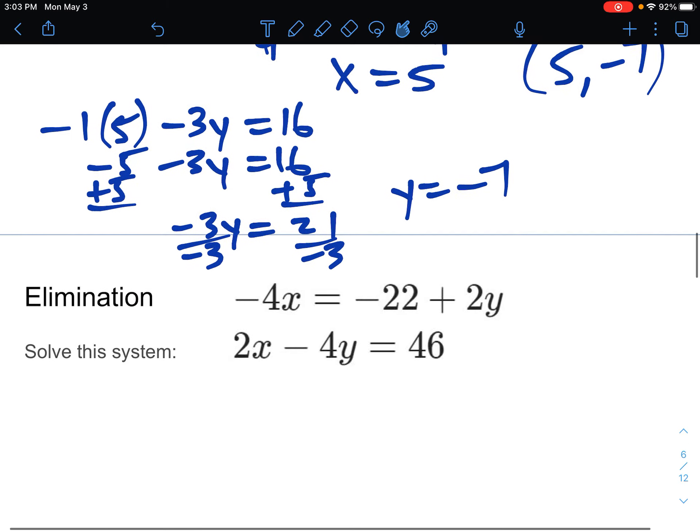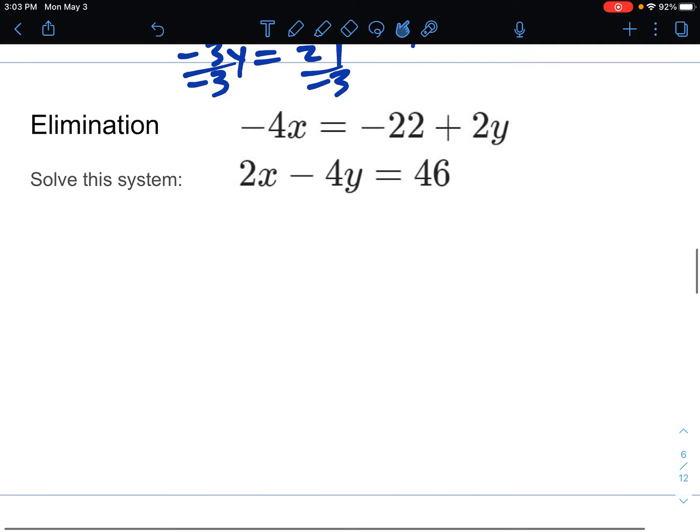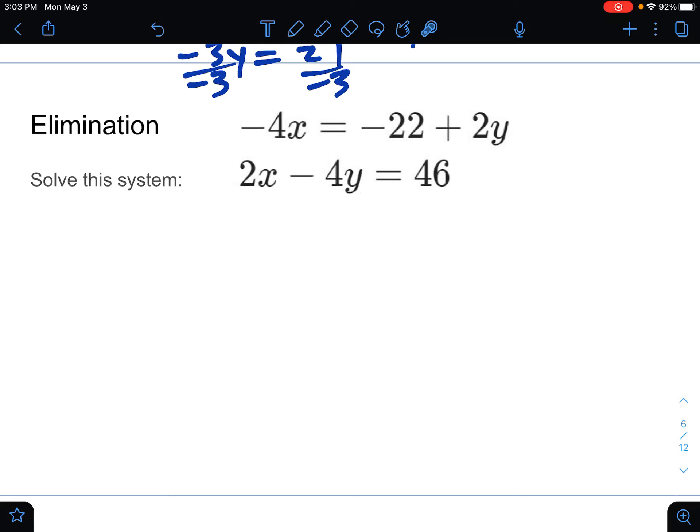All right, one more example. So for this one, it's a little bit trickier because it's not already lined up. It's not x's, y's equals numbers for both equations. The bottom equation is x's, y's equals numbers. But the top equation, we've got to move something around. So the equal sign is kind of the wrong spot. The 2x needs to get moved next to the x. So to do that, we're going to subtract it.